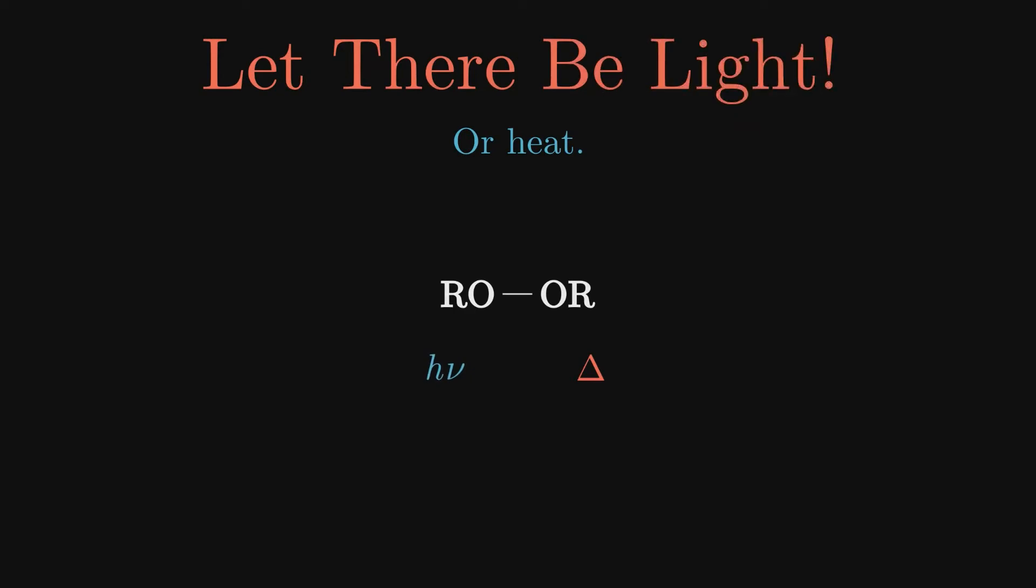Radical addition occurs in the presence of peroxide and begins when light or heat breaks the oxygen-oxygen bond such that each oxygen atom retains one of the bonded electrons. What we have now is a pair of alkoxyl radicals.